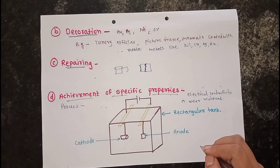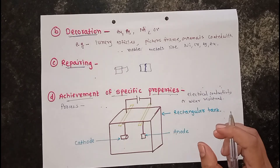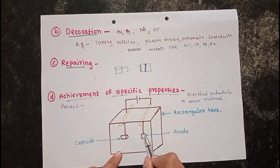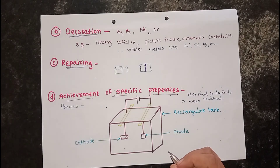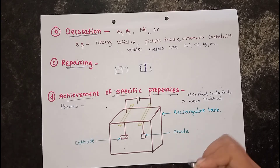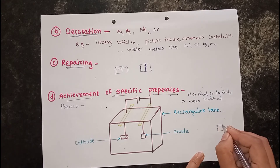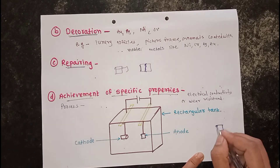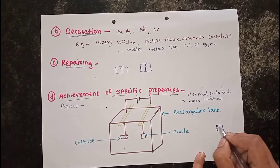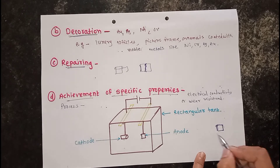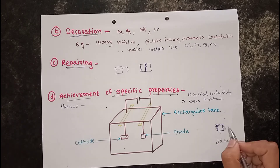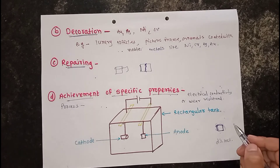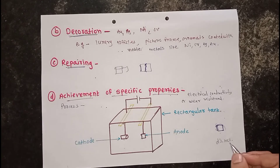In the electroplating process, to deposit one metal over another as a smooth, firmly adhering layer, the surface to be covered must be perfectly clean. The article to be electroplated is cleaned thoroughly with a hot solution of alkali to remove grease. Then it is treated with dilute HCl — a process called pickling — to remove any impurities or oxide layers. Finally, the piece is washed with water to free it from acids and carefully polished to make it smooth.